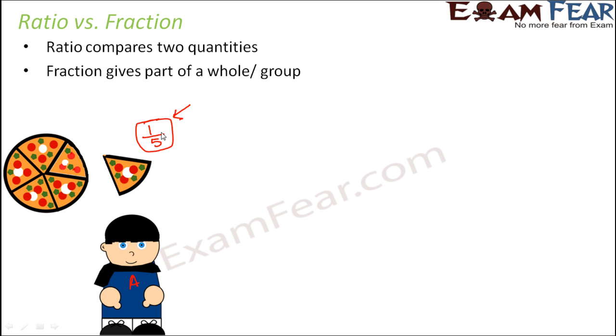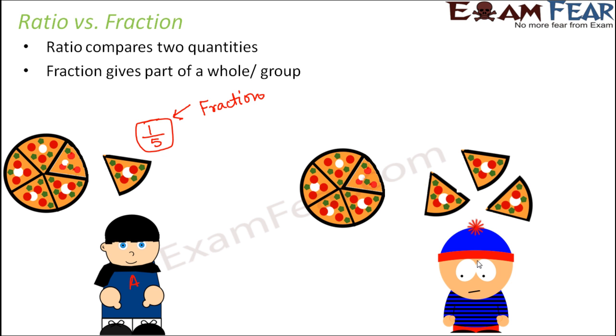This is not a whole, but this is part of a whole. So this one by five is nothing but a fraction. Let us say that there is another boy B and he ate three slices out of the five slices of the pizza.